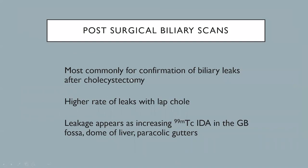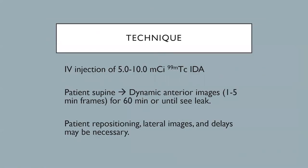Post-surgical biliary scans are commonly done for biliary leaks after cholecystectomy. There is a higher rate of biliary leakage with laparoscopic cholecystectomy. Leakage usually appears as increasing activity in the gallbladder fossa, along the dome of the liver, and along the pericolic gutters. The technique involves injecting the IDA analog compound, placing the patient supine, and acquiring dynamic imaging for 60 minutes or until leakage is seen. Lateral images and delayed images may be necessary.